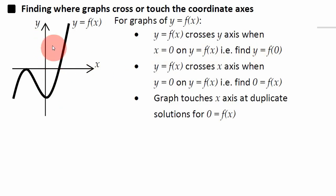To find out where a graph crosses the y-axis, you simply substitute x equals 0, and the result is where it crosses the y-axis.